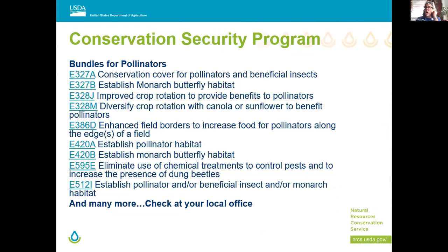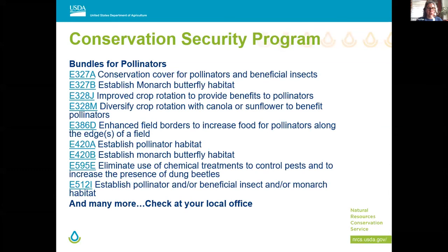Here's the Conservation Security Program — there are a ton of bundles targeted specifically towards pollinators: bees, pollinators, monarchs, and even dung beetles. Eliminate the use of chemical treatments to control pests and you increase the presence of dung beetles — which means reconsidering pour-on treatments for cattle. There's all kinds of assistance available. This can help offset the cost of these expensive native plants.